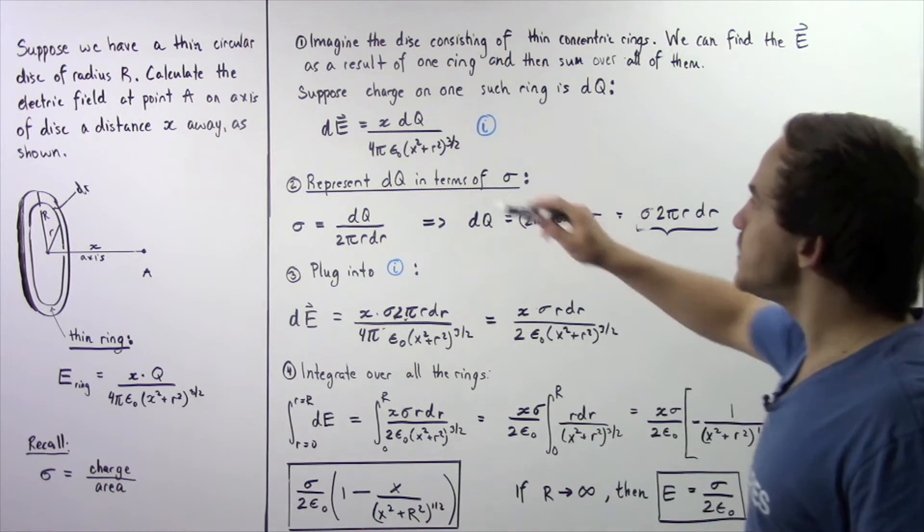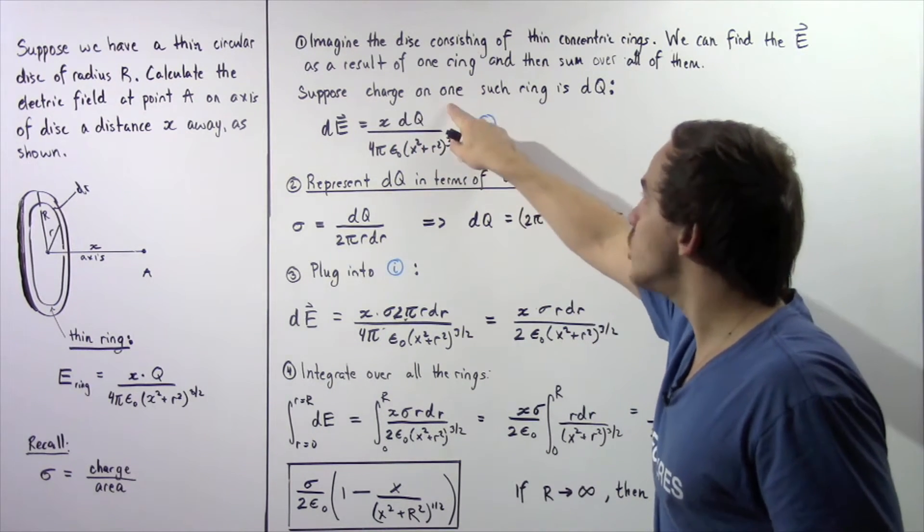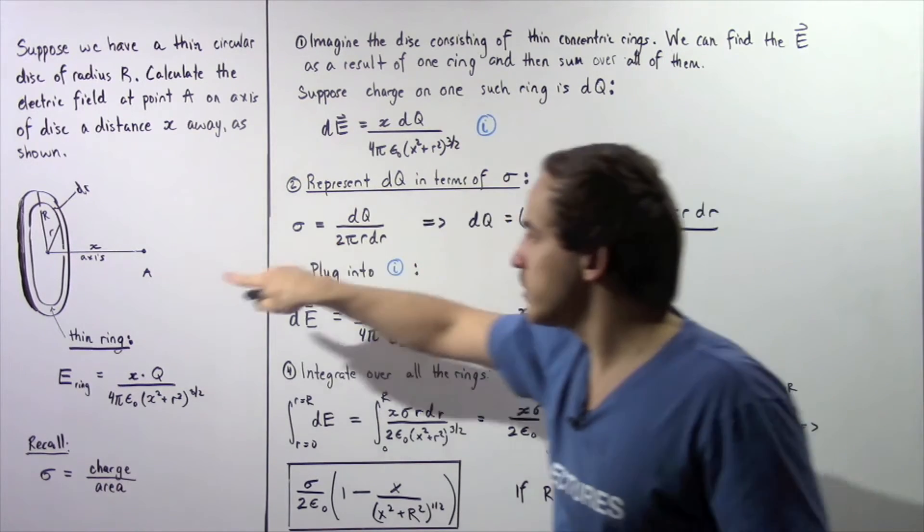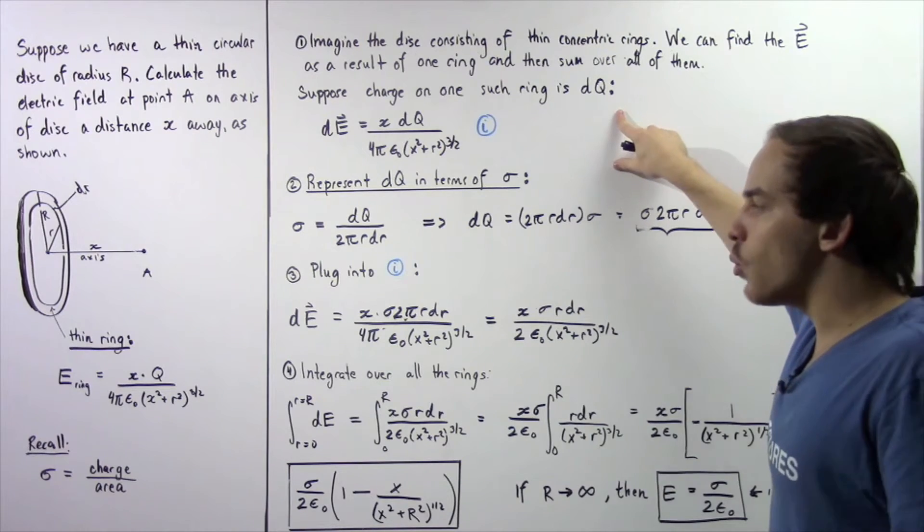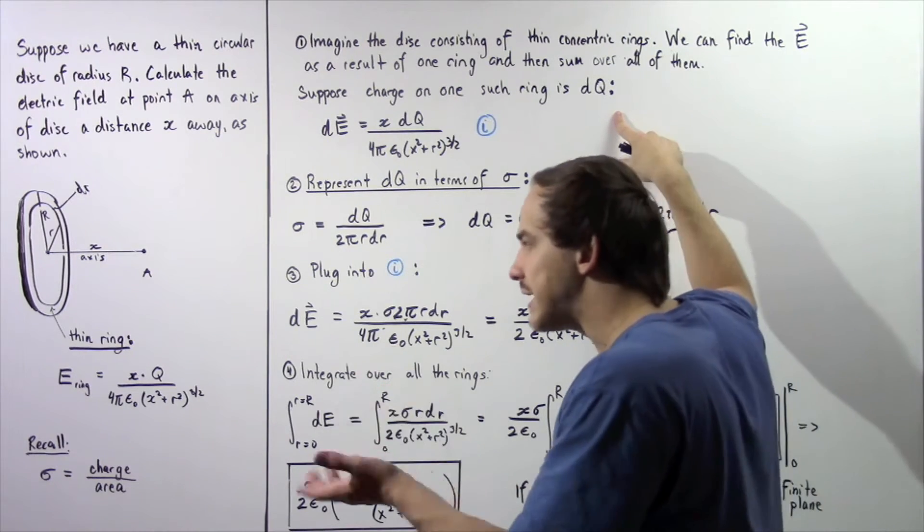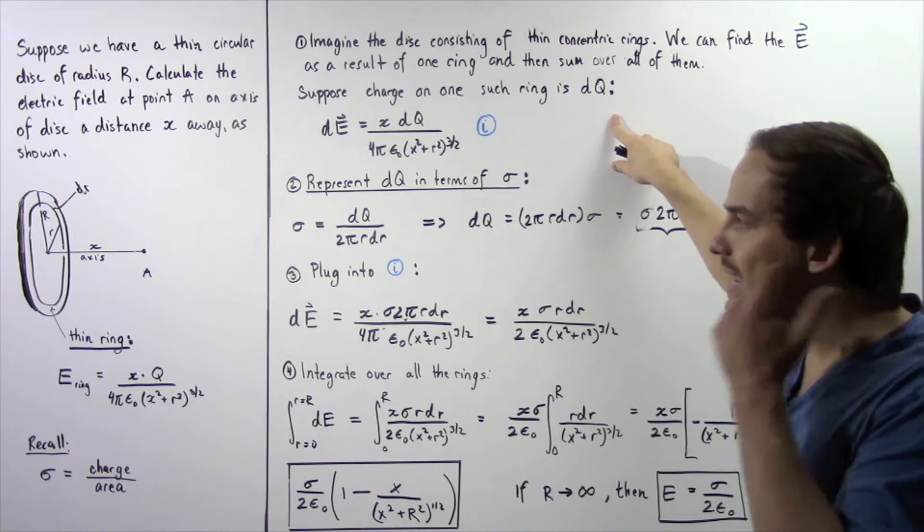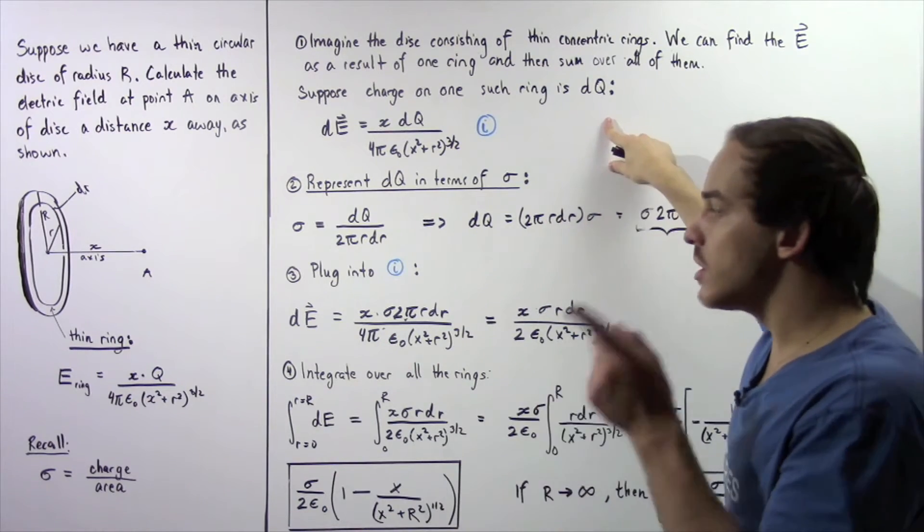So let's begin by supposing that the charge on one such ring as shown in the following diagram is equal to dq. So what exactly would the electric field be at point A as a result of such a thin ring?